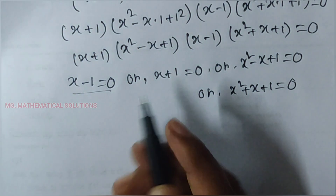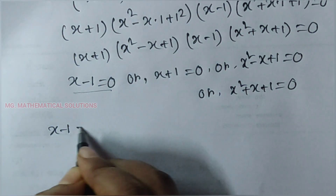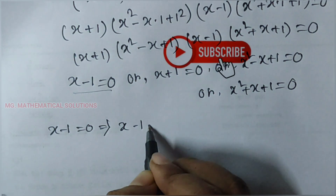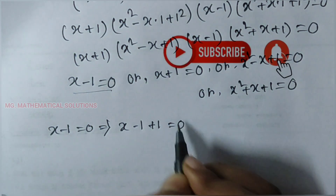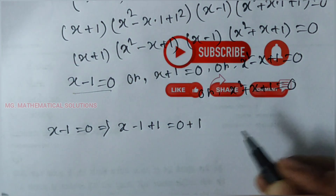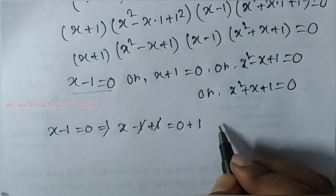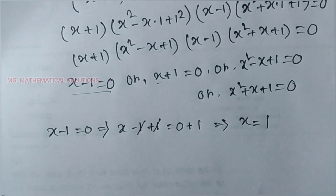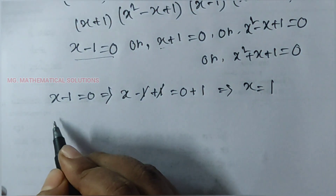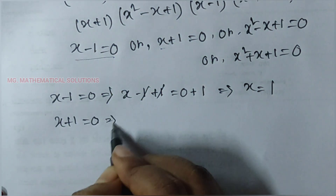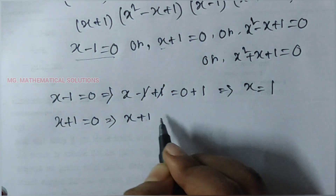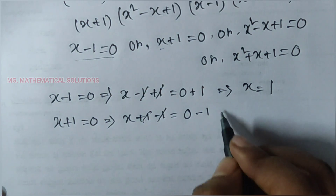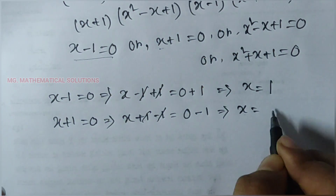First, we solve x - 1 = 0: adding 1 to both sides gives x equal to 1. Next, we solve x + 1 = 0: subtracting 1 from both sides gives x equal to minus 1.